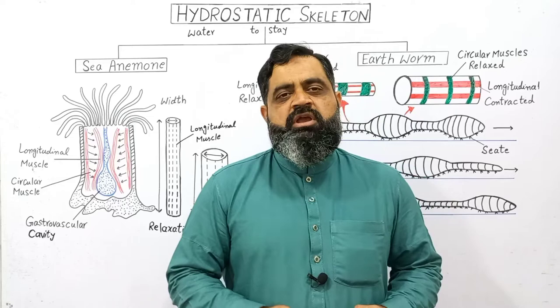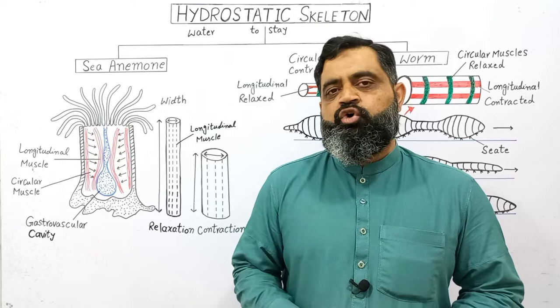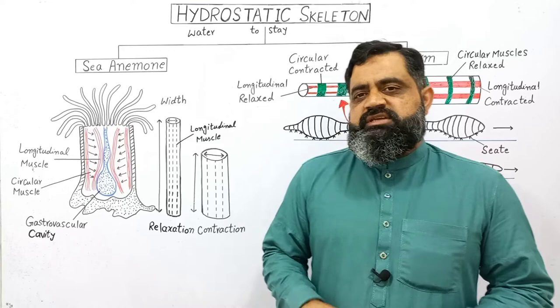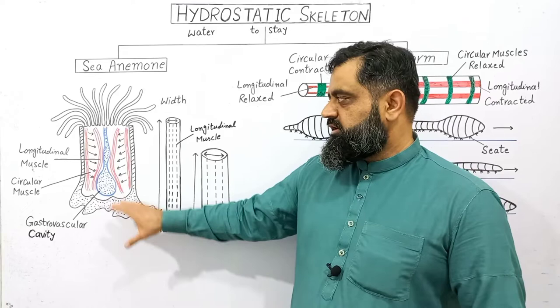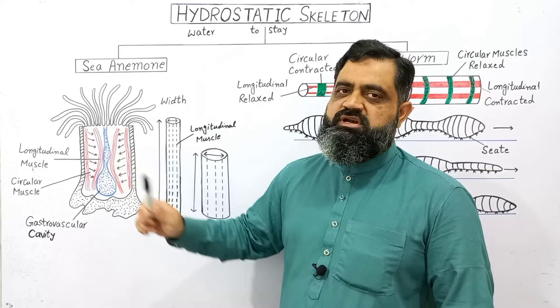The first example of hydrostatic skeleton is the sea anemone. Sea anemone is an animal which belongs to phylum Cnidaria, in which Hydra also belongs. Sea anemone is usually found in marine water, attached to a substratum or a rock. It has a cylindrical body which has tentacles on the oral surface of the body.